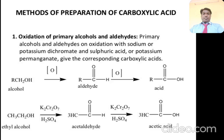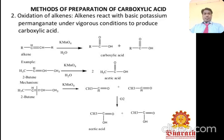From an aldehyde, further oxidation with potassium dichromate gives the carboxylic acid. For example, ethanol oxidized with potassium dichromate in the presence of sulfuric acid gives acetaldehyde; further oxidation with potassium dichromate and sulfuric acid finally gives acetic acid.